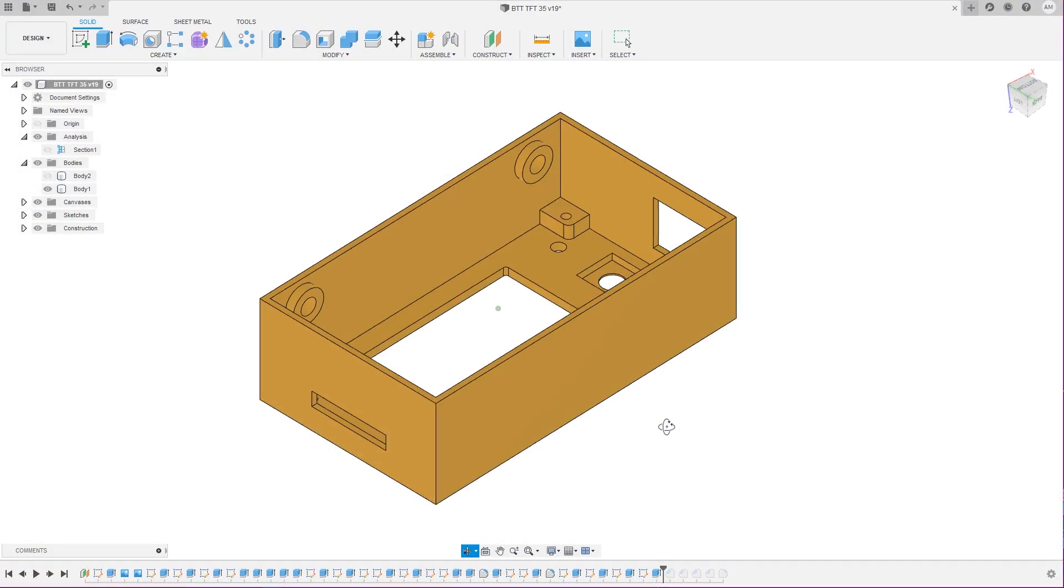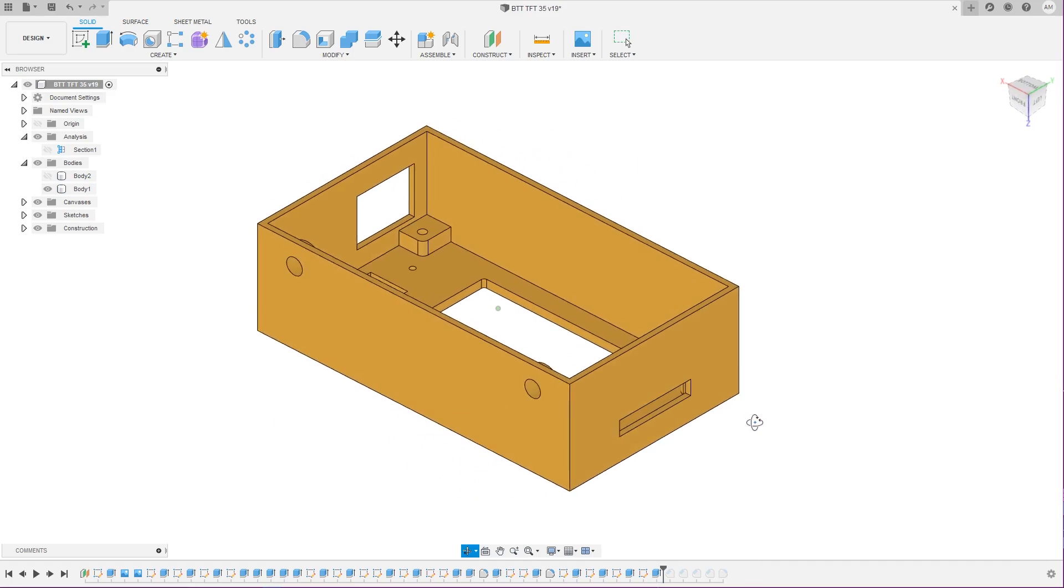Number three is try not to over complicate the design. There can be a lot going on and if you try to aim too high and integrate too many features you can over complicate things and then you print it out and it doesn't even work at all. Maybe the holes are not in quite the right place because you were rushing it or you wanted to focus on other features.